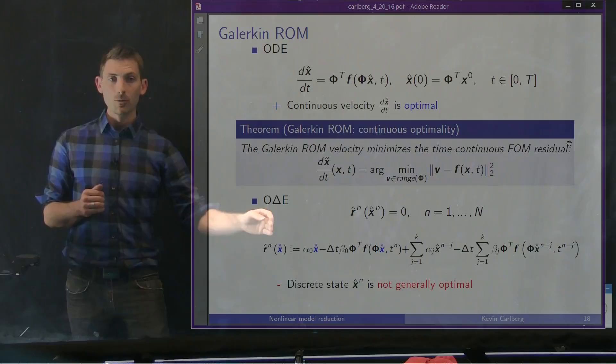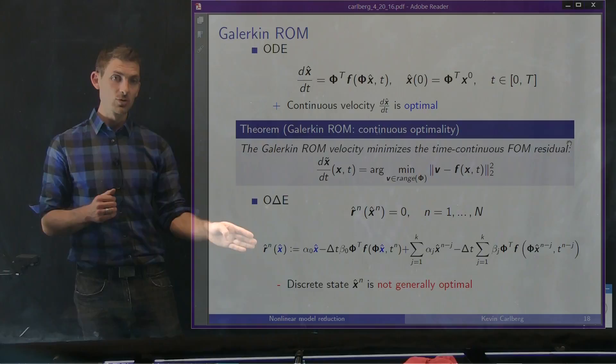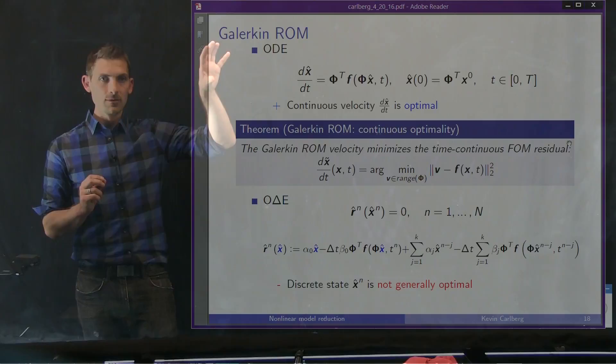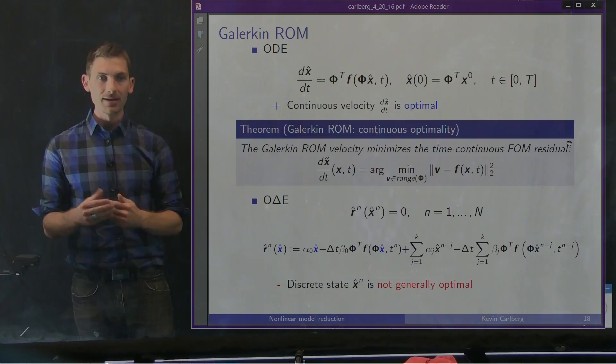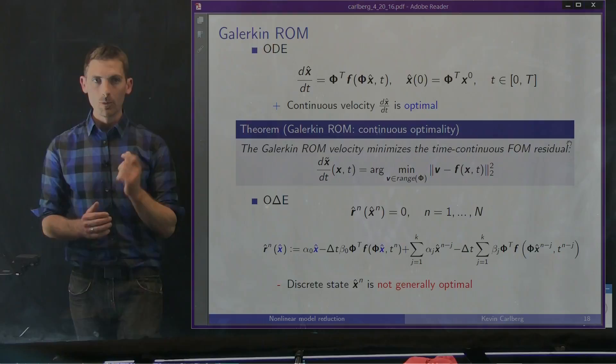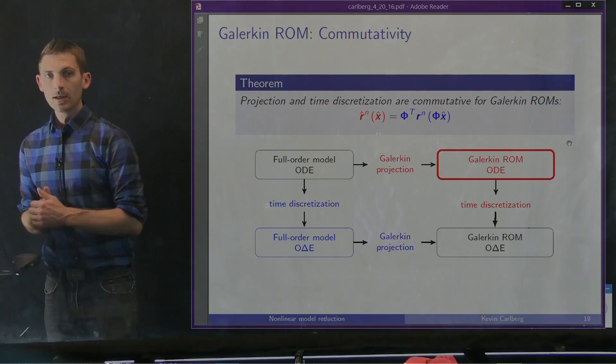Of course, we have to solve this model on a computer, so we introduce a time discretization method. At each time step, we set the residual to zero. Unfortunately, it's not possible to prove in the general case that x̂ⁿ is optimal in any sense. We had optimality at the time-continuous level, but once we've gone to the time-discrete level, we've lost that notion of optimality in the solution we actually compute. This is concerning, and it's what we've tried to improve.